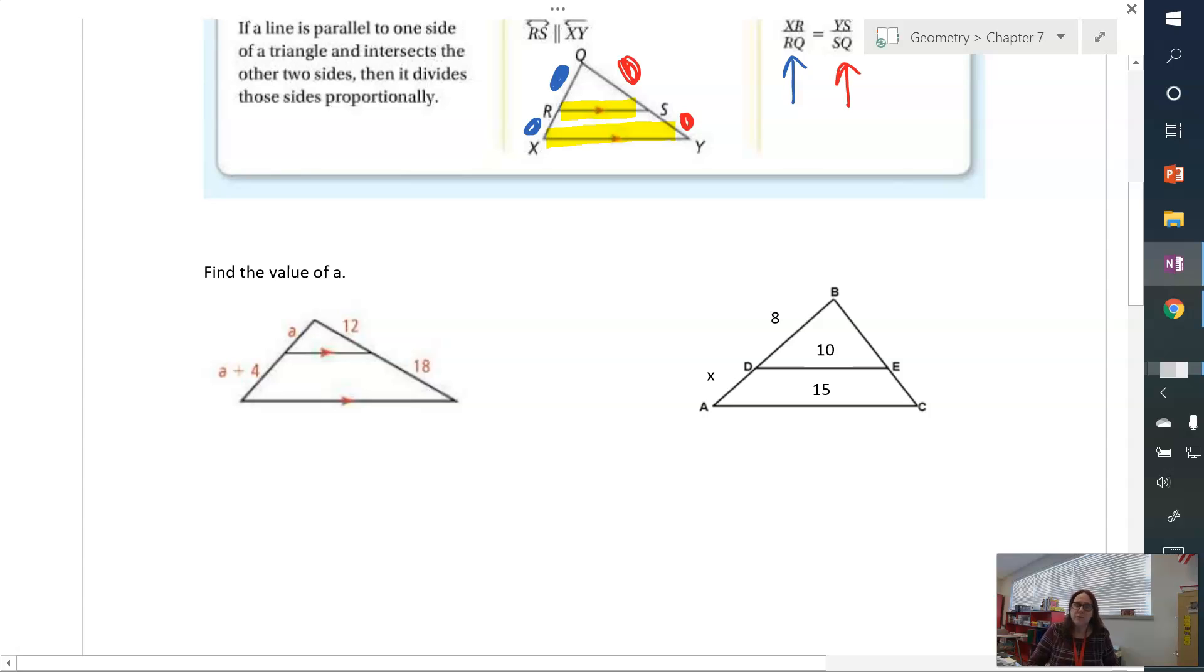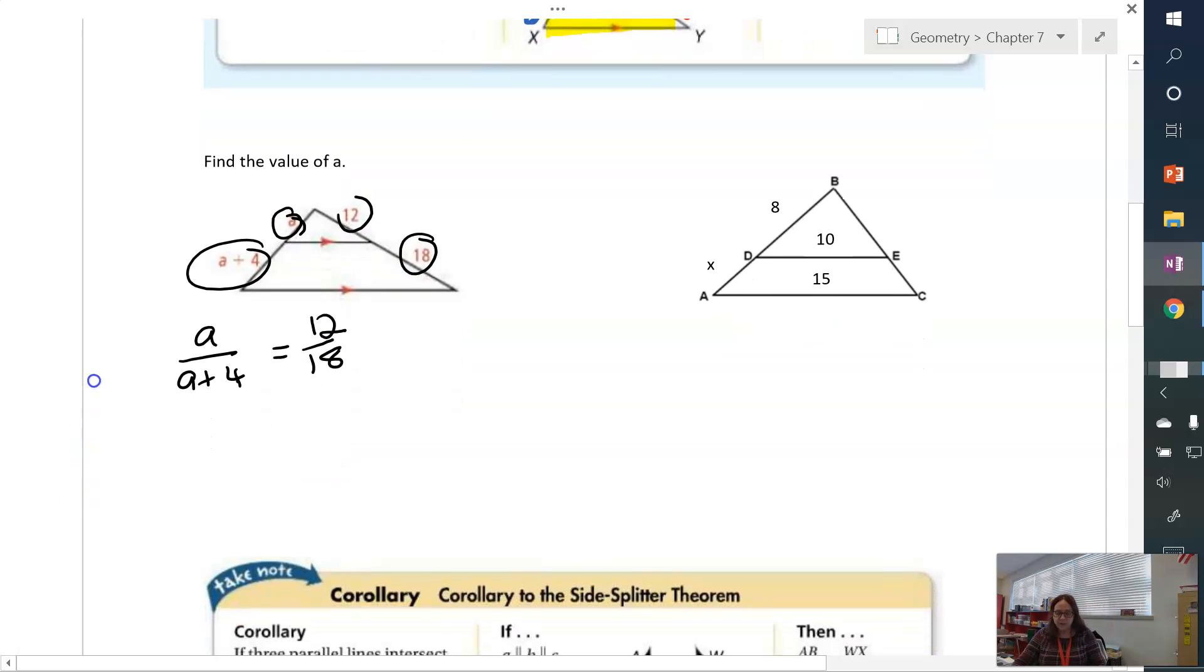So here I have in this triangle, I'm looking for the value of a. And I have a segment in here that's parallel to the base, so I can use side splitter. And what I'm going to do is I'm going to relate a to a plus 4. So a over a plus 4 is going to equal 12 over 18. And I get that straight from the side splitter theorem.